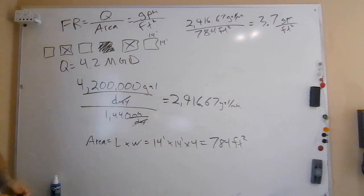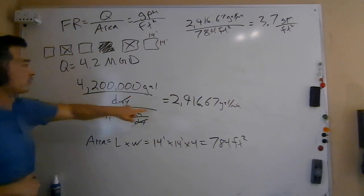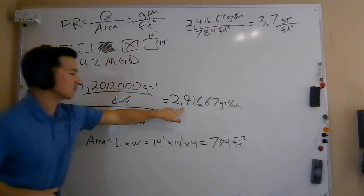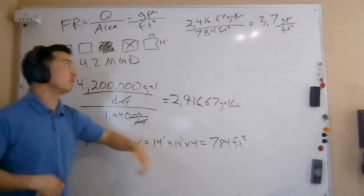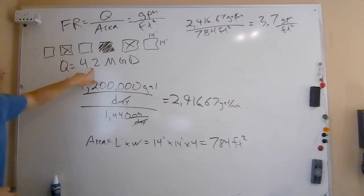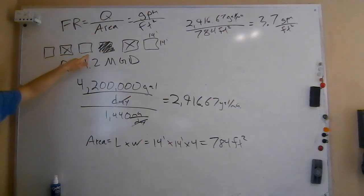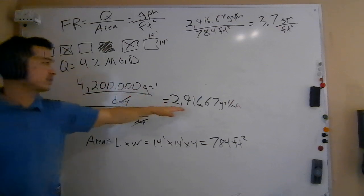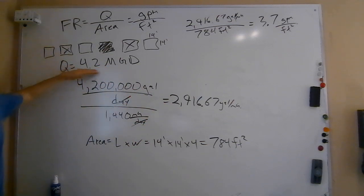The other way to think about doing this problem is instead of saying the total flow here is being treated by four filters, we could just say a quarter of the flow is being treated by one filter. So what we could have done in the beginning right here is said 4.2 MGD. We could have divided this by four. We could have divided this flow by four. Either way, we're accounting for a factor of four. So if we divide this by four, and we're going to get just over one MGD, that one MGD is what's being treated by one filter.